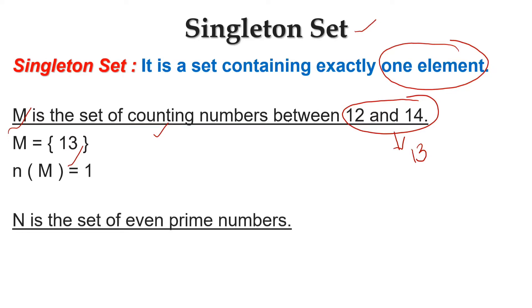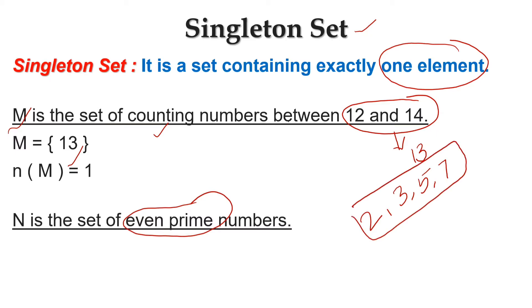Let's see another example. N is the set of even prime numbers. You can see here we have some prime numbers: 2, 3, 5, 7. And you can see that 2 is the only prime number which is even — rest all prime numbers are odd. So the element of set N is 2. This set has only one element, so set N is a singleton set.